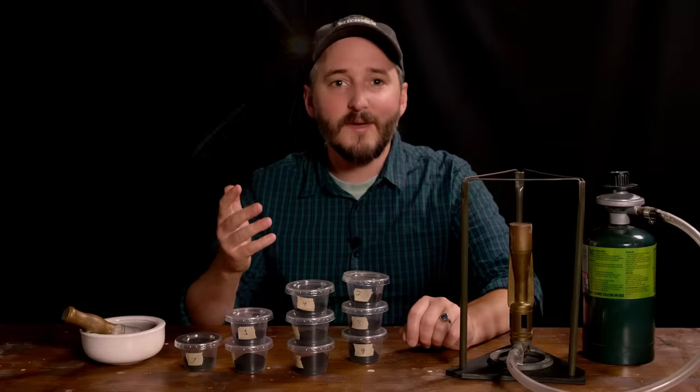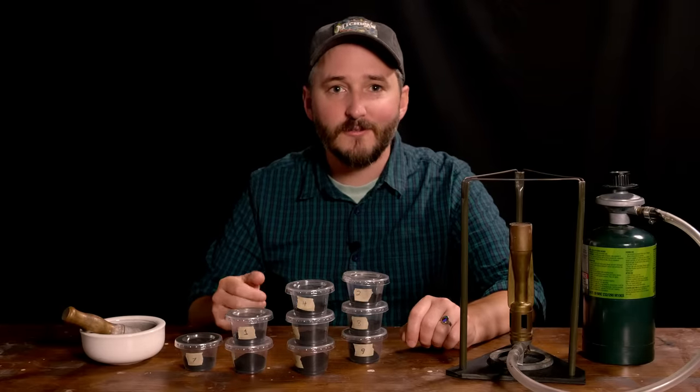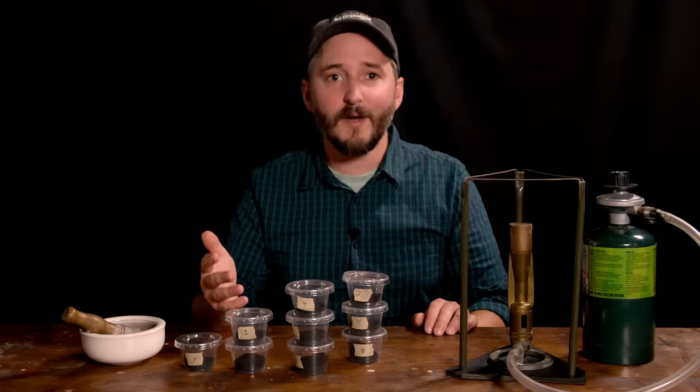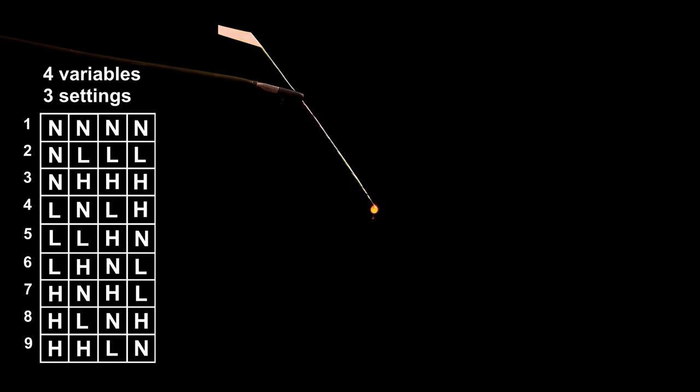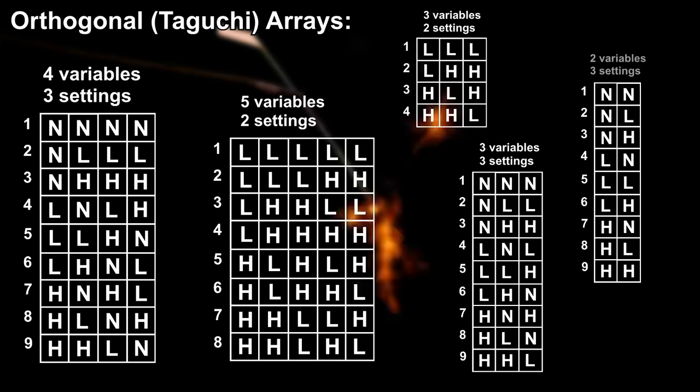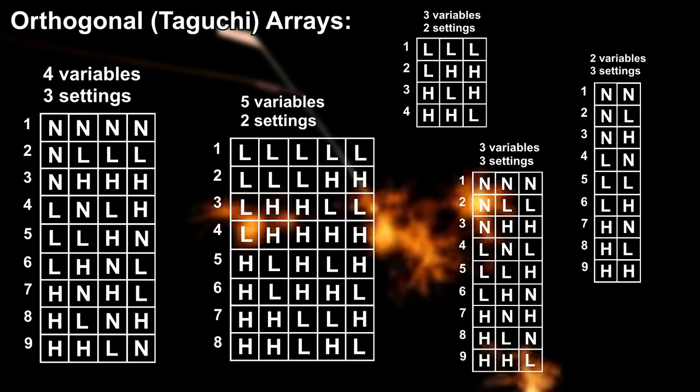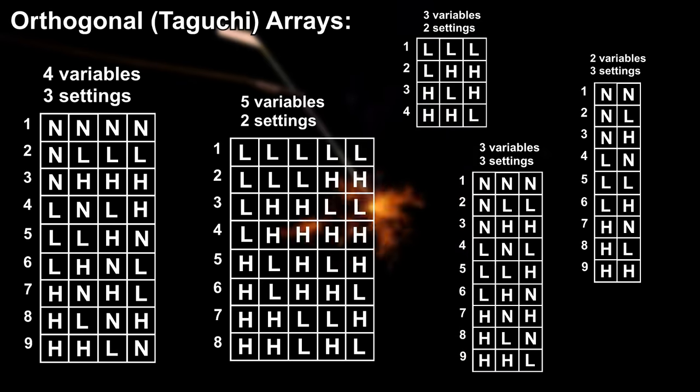So I mixed up nine different sparkler compositions based on the measurements determined by the four variable orthogonal array. This table was just pulled out of a list of tables set up for experiments of various sizes. You don't need to build these tables yourself. Just google Taguchi arrays and you will likely find one that will work for as many variables as you'd like to test.